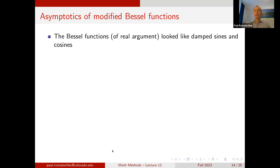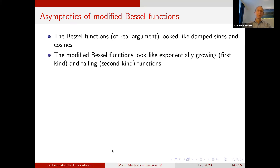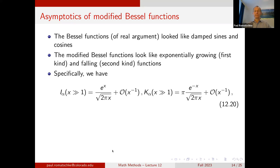The ordinary Bessel functions of real argument looked like damped sines and cosines. Since the modified Bessel functions are Bessel functions with imaginary argument, the modified Bessel functions look either exponentially growing (first kind) or exponentially falling (second kind). Specifically, I_α for large x grows exponentially with a damping factor of 1/√x, and K_α is given as an exponentially damped function e^{−x} / √x.